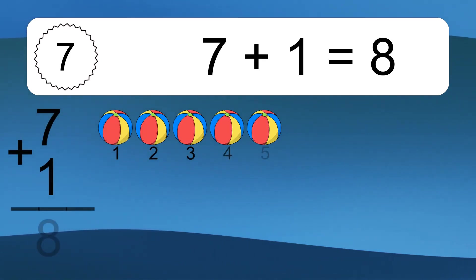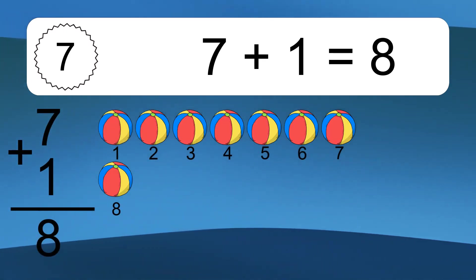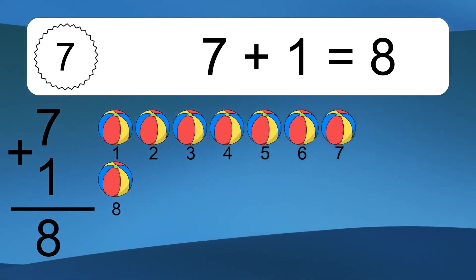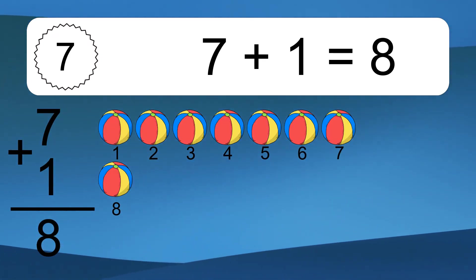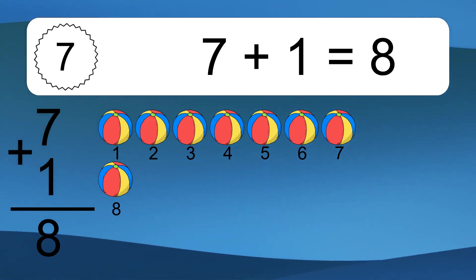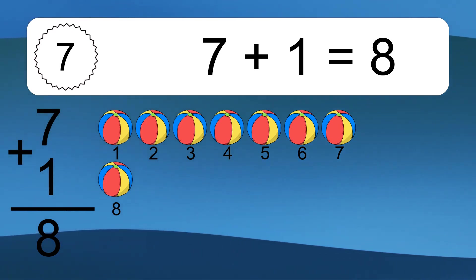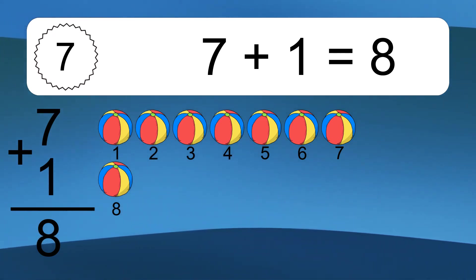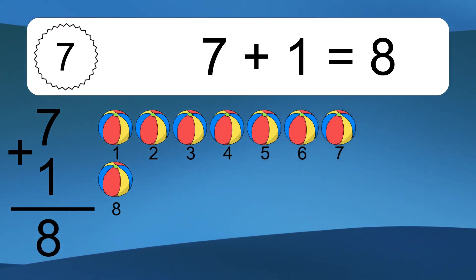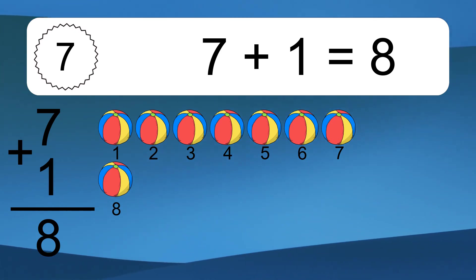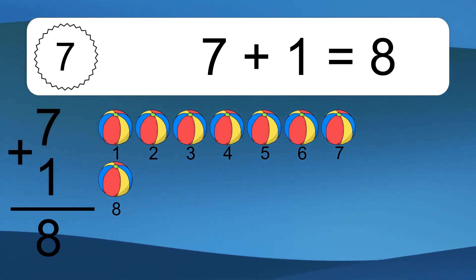7 plus 1 equals 8. Let's count it. 1, 2, 3, 4, 5, 6, 7, 8.